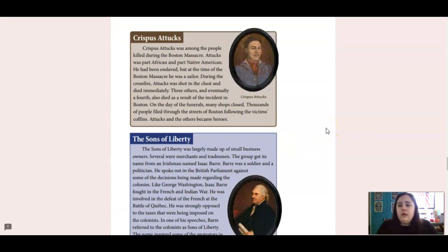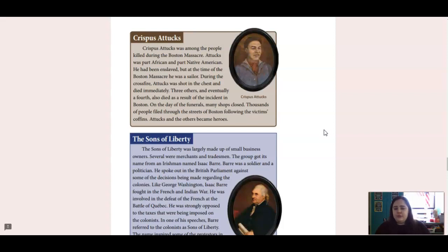Crispus Attucks was among the people killed during the Boston Massacre. Attucks was part African and part Native American. He had been enslaved, but at the time of the Boston Massacre, he was a sailor. During the crossfire, Attucks was shot in the chest and died immediately. Three others, and eventually a fourth, also died as a result of the incident in Boston. On the day of their funerals, many shops closed. Thousands of people filed through the streets of Boston following the victims' coffins. Attucks and the others became heroes.